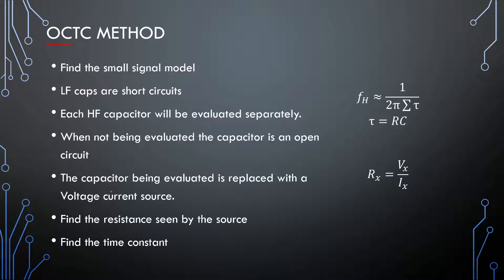Where the difference comes in is that we will be replacing the capacitor under review with a voltage current source. It's a current source which has a voltage drop across it, and if we divide the two we can find the resistance seen by the capacitor. This is mainly used for those awkward capacitors like C_mu — capacitors that you are not really sure what they are seeing in parallel with themselves. This is a good method to use.